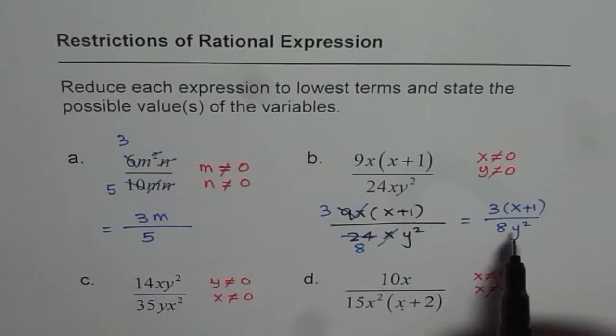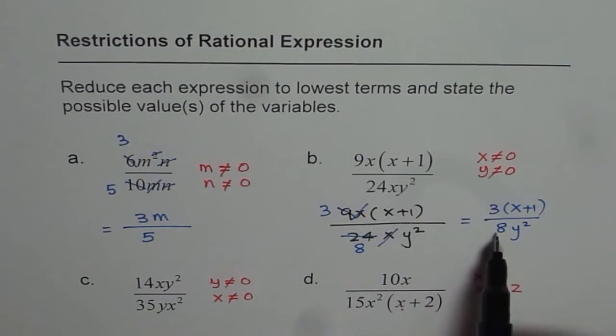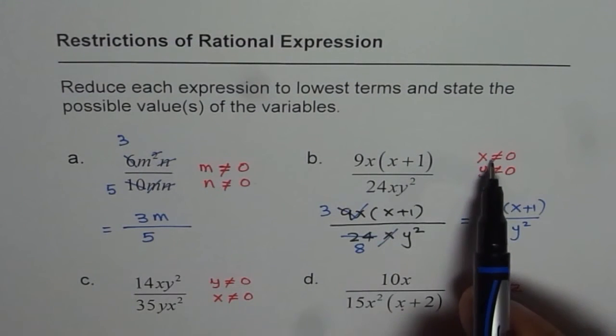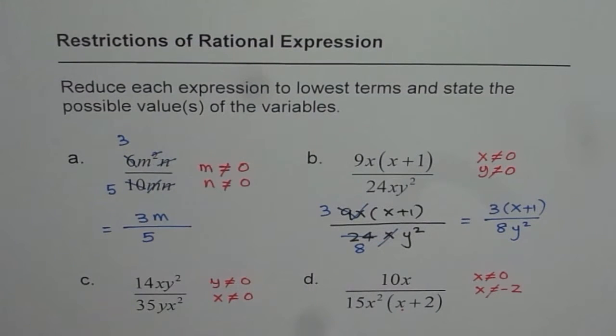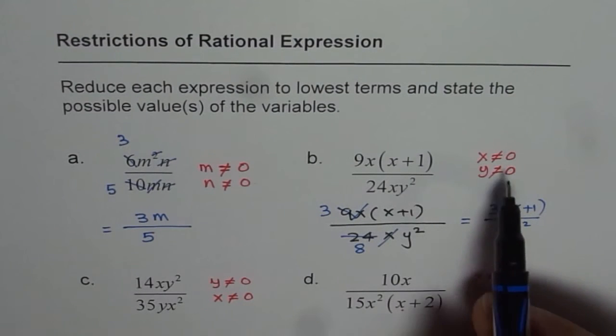Now, I hope you will appreciate why we wrote X is not equal to 0. See, X got cancelled off. So if you look at the simplified form, you will miss one of the restrictions. That is kind of error. So to avoid errors, write restrictions first.